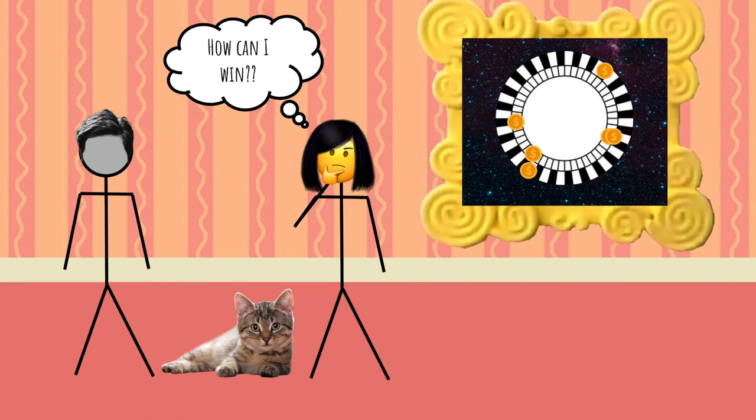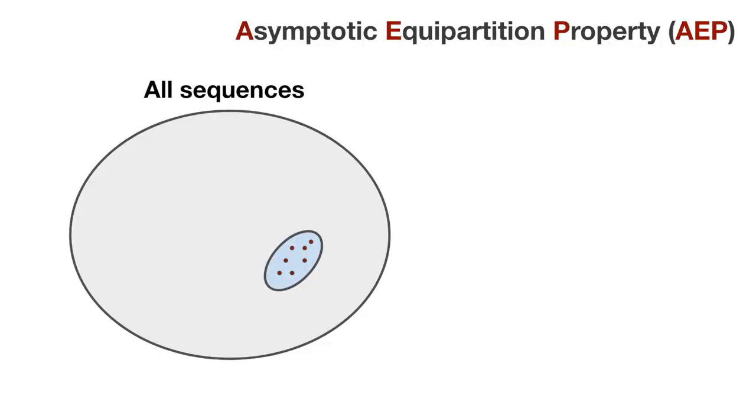Ashley is trying to pick the best strategy when she realizes this is the perfect application for AEP. The Asymptotic Equipartition property involves looking at all possible sequences of meows and tells us that only a small fraction of them will occur in practice.